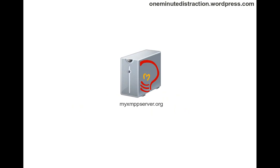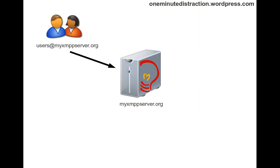Let's begin by looking at what is an XMPP service or application and how can we go about developing such a service. Assuming that I've got an XMPP server called myxmppserver.org and we have some users who are logged into this XMPP server — they could be chatting with each other, or using services like chat rooms for multi-user chat, or sharing files using the file transfer service. So if you want to provide additional services to this particular server, how would you go about doing it?